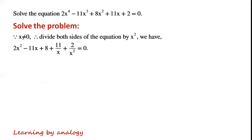Because x doesn't equal 0, by dividing both sides of the equation by x², we have 2x² minus 11x plus 8 plus 11 over x plus 2 over x² equals 0.